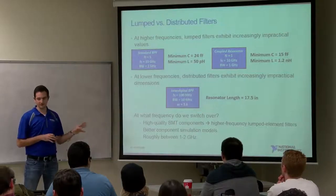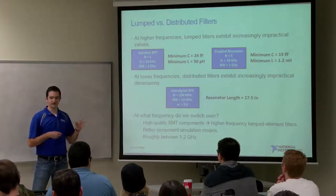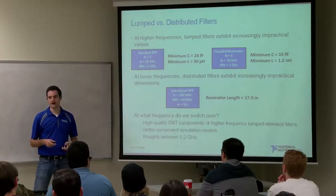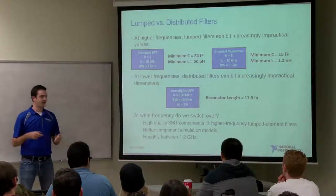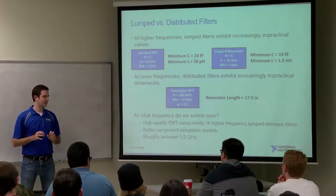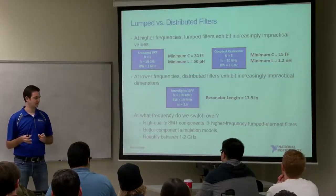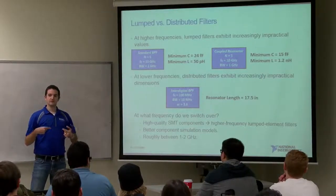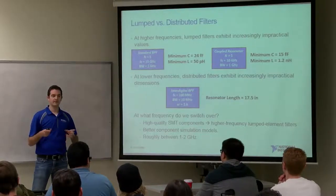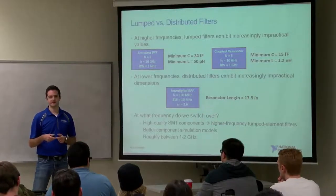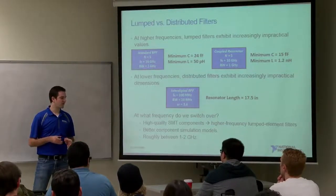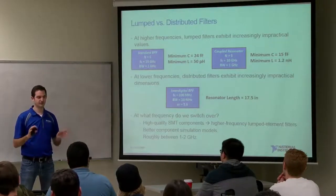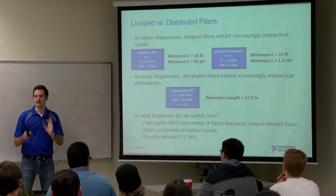The good news for lumped element filter designers is that high quality surface mount components, designed with lower parasitic effects, can be used to higher frequencies. Also, as these components have better simulation models, you can account for effects beforehand in simulations to have more successful designs. As a general rule of thumb, you'd want to start considering which type to use between one and two gigahertz — that's when you'll see the transition between impractical dimensions and impractical values beginning to occur.